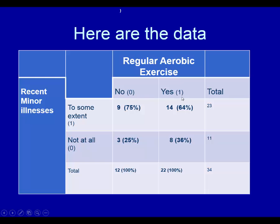The numbers 0 and 1 are sometimes codes for no versus yes. We have it on both categories. For those who did regularly exercise, of the 22 people who did, 14 of them had minor illnesses to some extent. Eight of them had minor illnesses none at all. Over here we have those who did not exercise with the same kind of information.